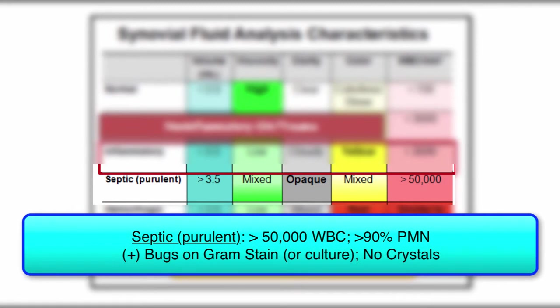Septic effusions have lots of white cells. The numbers vary, but greater than 50,000 is pretty reasonable. The cell differential is usually described as greater than 90% PMNs. Organisms are also present, but no crystals will be described.